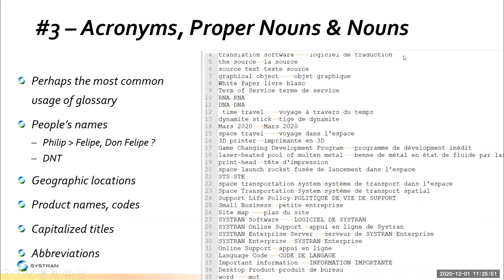Let's take a look at a few examples. Acronyms, proper nouns, and nouns are probably the most typical ones we think of when we think dictionary — glossaries, terminologies. Terms are often proper nouns: names, people's names, geographic names, secret code names that could carry a company into billion-dollar profit.